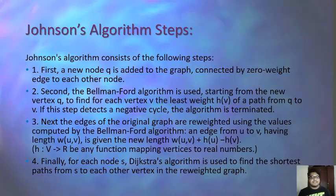The steps of Johnson's algorithm are as follows. Step 1: a new node Q is added to the graph, connected by zero-weight edges to each of the other nodes. Step 2: the Bellman-Ford algorithm is run from Q to find, for each other vertex, the least weight of a path from Q to V. If a negative cycle is detected, the algorithm terminates. Step 3: the edges of the original graph are re-weighted using the values computed by Bellman-Ford — an edge from U to V with length W(U,V) is given new length W(U,V) + H(U) − H(V). Step 4: for each node S, Dijkstra's algorithm finds the shortest path from S to each other vertex in the re-weighted graph.